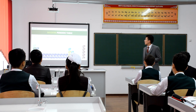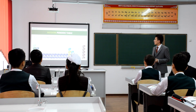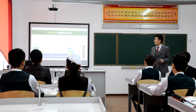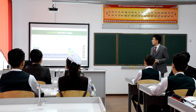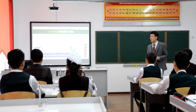Nowadays, there are 118 chemical elements. Ninety-four of them occur naturally, where the remaining twenty-four elements are synthetic elements.